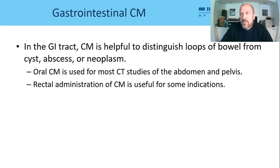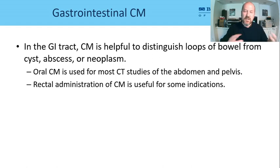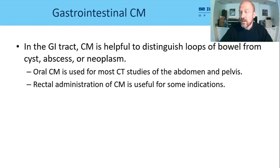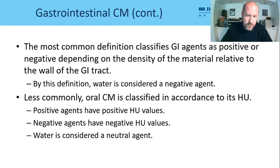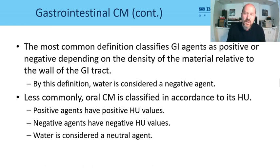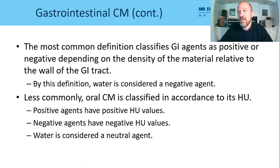Switching to GI contrast — oral and rectal. This is helpful for evaluating loops of bowel and differentiating cysts, abscesses, and cancer. We primarily use oral contrast, and sometimes rectal contrast for appendicitis in emergent settings when the patient needs to go to surgery quickly. Positive contrast agents have a positive Hounsfield value; negative agents have a negative Hounsfield value. Water is considered neutral since the Hounsfield scale is zeroed on water.